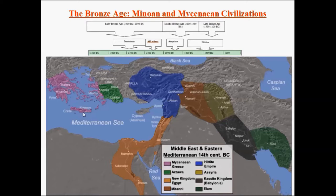The Aegean, where a lot of our story will be taking place, is the sea in which you have what will become Greece. Across the sea is Asia Minor, nowadays Turkey. And we have Crete to the south and a bunch of little islands that are going to be called the Cyclades Islands. Each of these will play a role in our story.